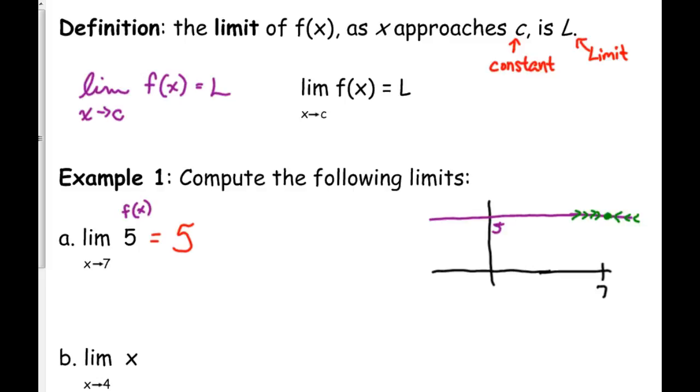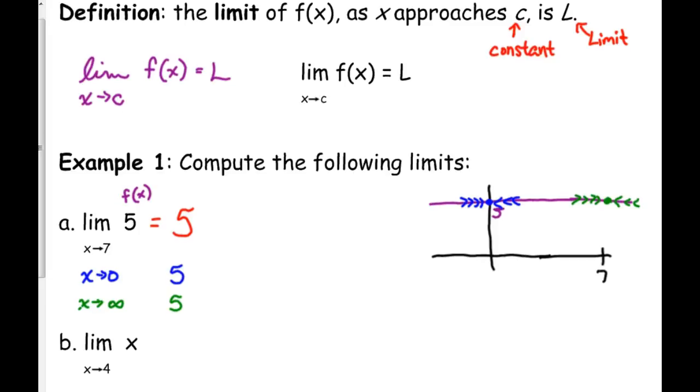It doesn't matter if I'm approaching 0. I can change that. I can say, well, what is the limit as x approaches 0? Or as I'm approaching 0, I'm still approaching the same y value. That y value is still 5. Let's throw infinity in there because infinity is going to come up a lot in calculus. If I'm going towards infinity, that means I'm going as far to the right as I possibly can, my y values are still always 5. They're still always 5. So the limit of this constant is always going to be that constant.